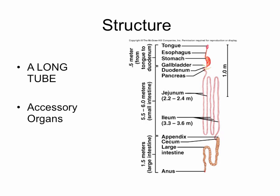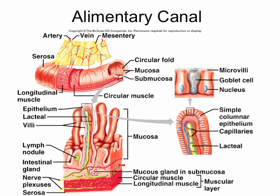Accessory organs such as the salivary glands, the gallbladder, and the pancreas add secretions to the tube. All parts of the tube from the esophagus through the colon have a similar four-layered structure.